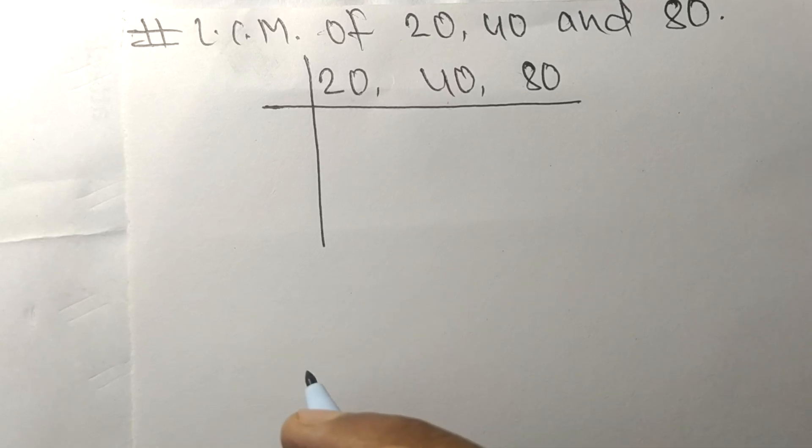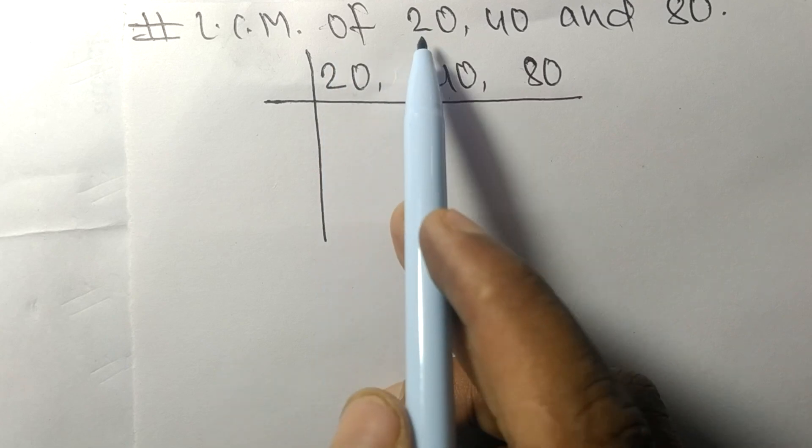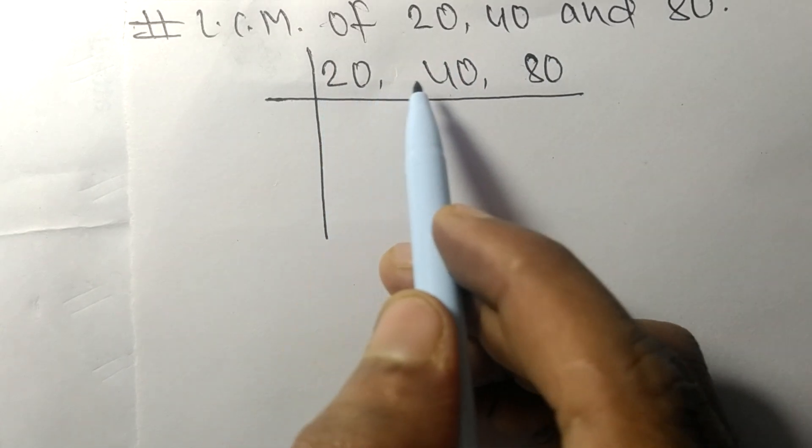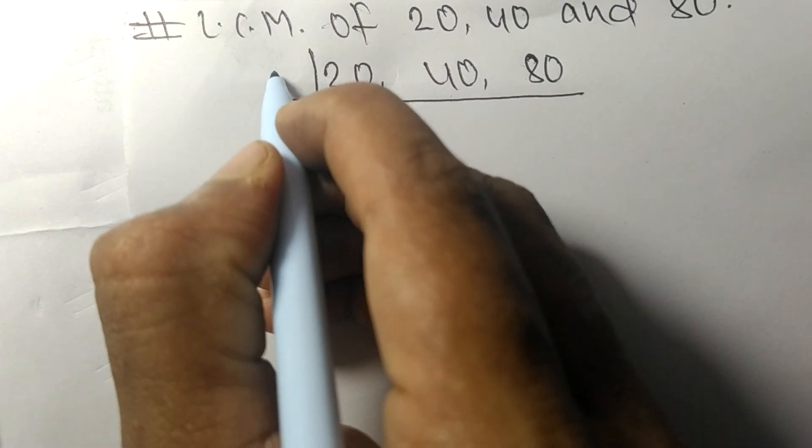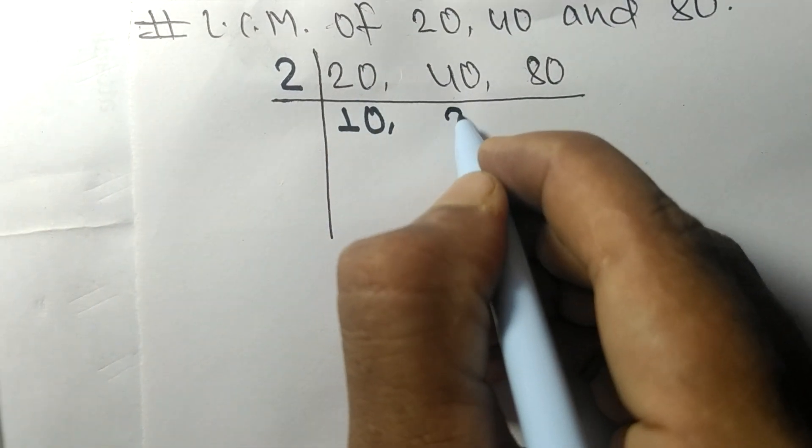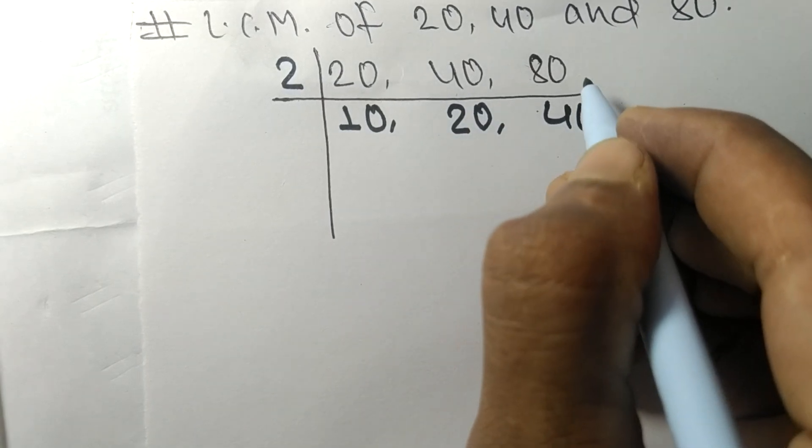Today in this video we shall learn to find the LCM of 20, 40, and 80. All these numbers are divisible by 2. 2 times 10 means 20, 2 times 20 means 40, 2 times 40 means 80.